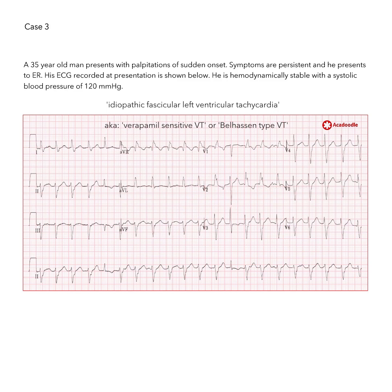The QRS duration in these cases is close to the normal range and may even fall within the upper limit of the normal range. Analysis of case reports in the literature suggests that reasonably obvious evidence of AV dissociation is frequently present in these cases, but it is often missed. The tachycardia may then be erroneously treated as a paroxysmal SVT in these relatively young patients.